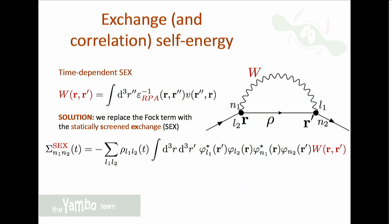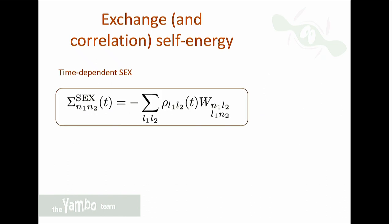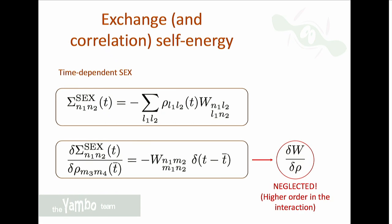At variance with the Hartree case, the screened interaction W can carry its own momentum, so this results in an additional integral over momenta in Fourier space. We take the functional derivative with respect to the density matrix. We need to differentiate W itself with respect to the Green's function and density, but we neglect this derivative because it leads to higher-order terms in W, and we then obtain a simple form for the self-energy part.